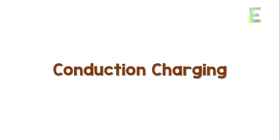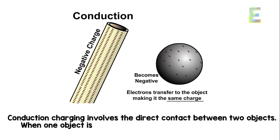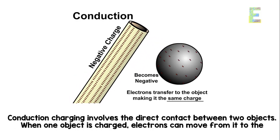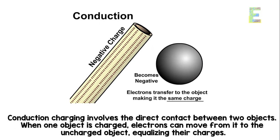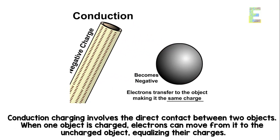Conduction charging involves the direct contact between two objects. When one object is charged, electrons can move from it to the uncharged object, equalizing their charges.